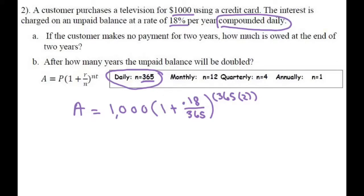And when you do that, you're going to get $1,433.20. Now we have to do part B.